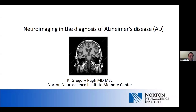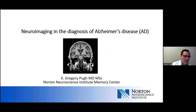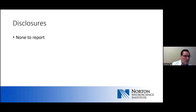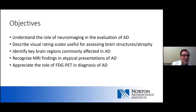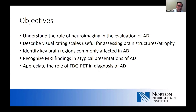I'm going to talk a little bit about neuroimaging, mostly in the diagnosis of Alzheimer's disease, because it is such a key and critical step in evaluating dementia. I have no disclosures to report. Hopefully, you'll have a better understanding of the role of neuroimaging in the evaluation of Alzheimer's disease. I'd like to introduce you to some visual rating scales that are helpful when we try to do a systematic approach to assessing brain atrophy, and identify key brain regions commonly affected in Alzheimer's disease.